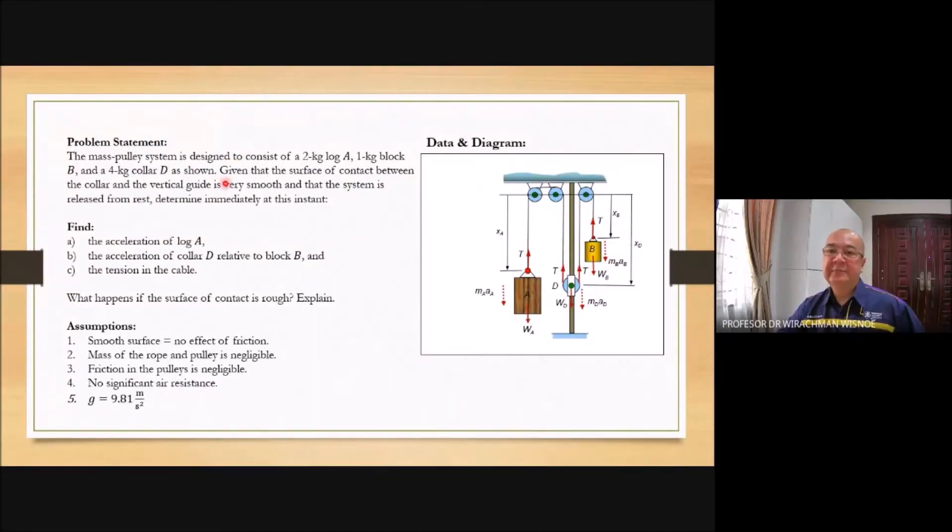The mesh pulley system is designed to consist of a 2 kg log A, 1 kg block B, and a 4 kg collar as shown. Given that the surface of contact between the collar and vertical guide is very smooth, and that the system is released from rest,